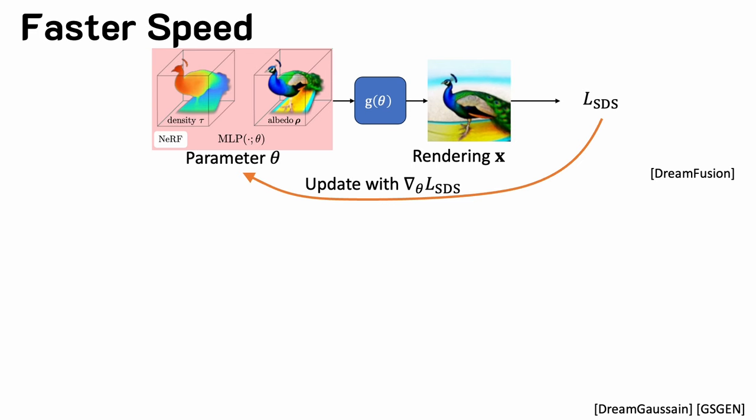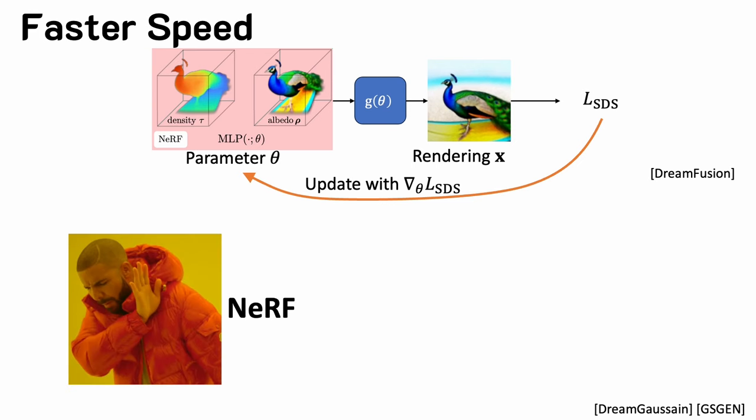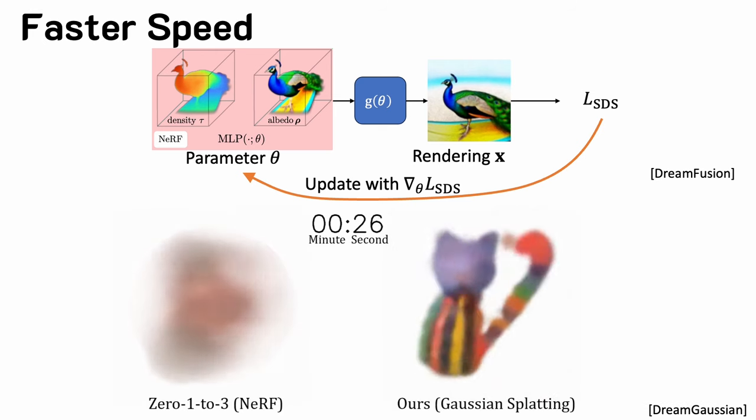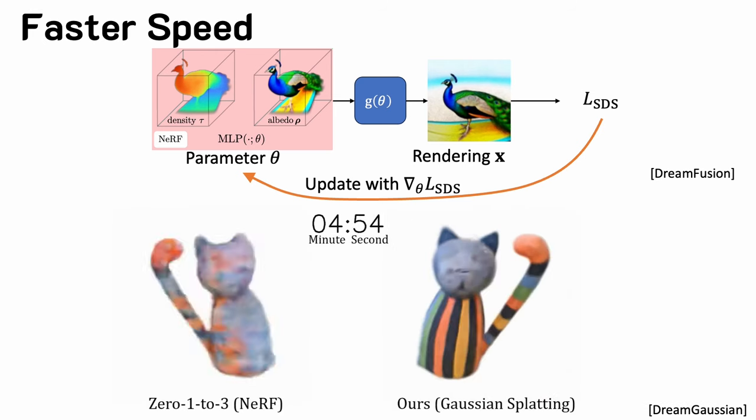Next, how can we improve the training speed? We can replace the 3D representation from a NeRF MLP with Gaussian splatting. We can see that the training now converges much faster.